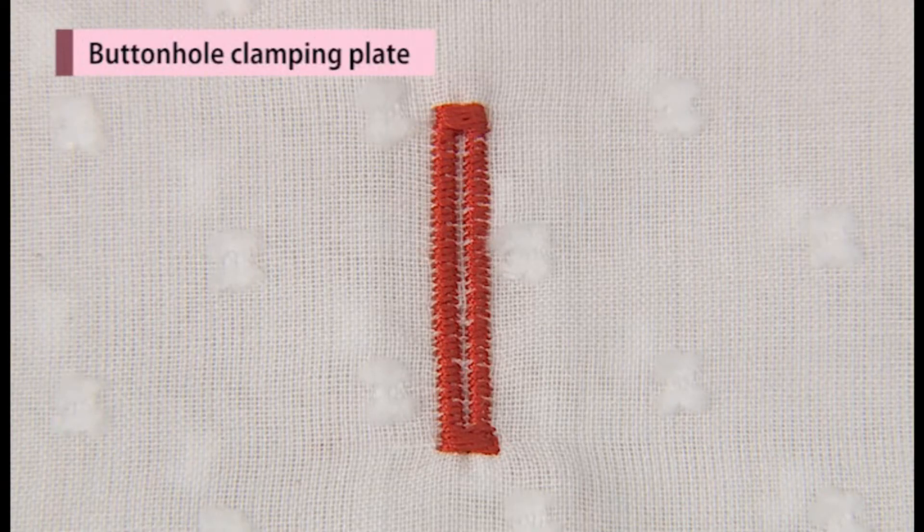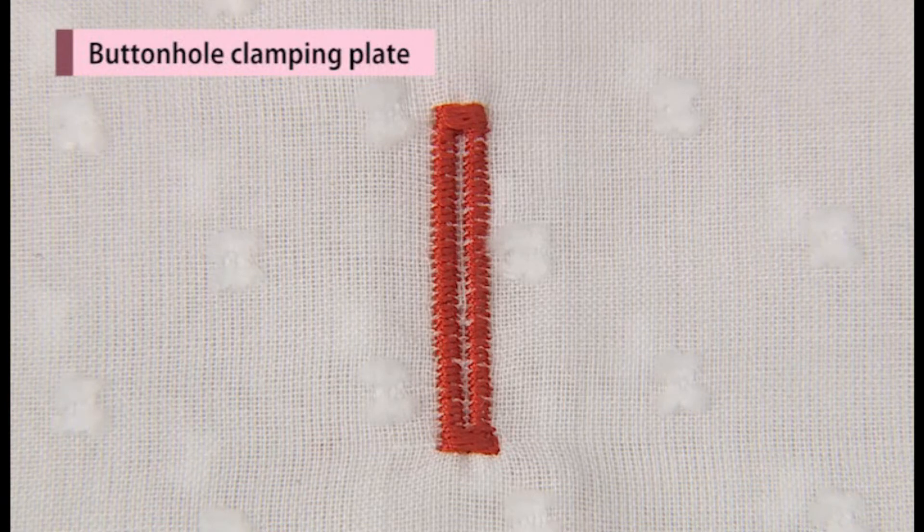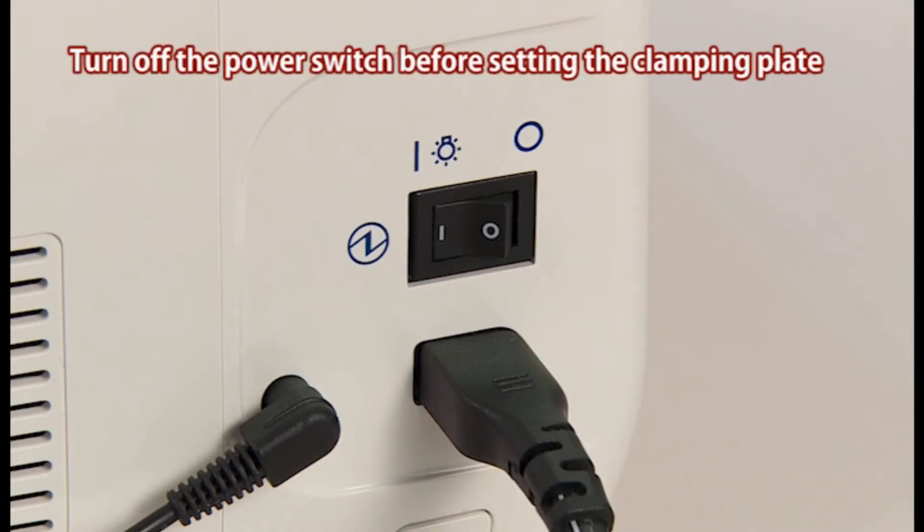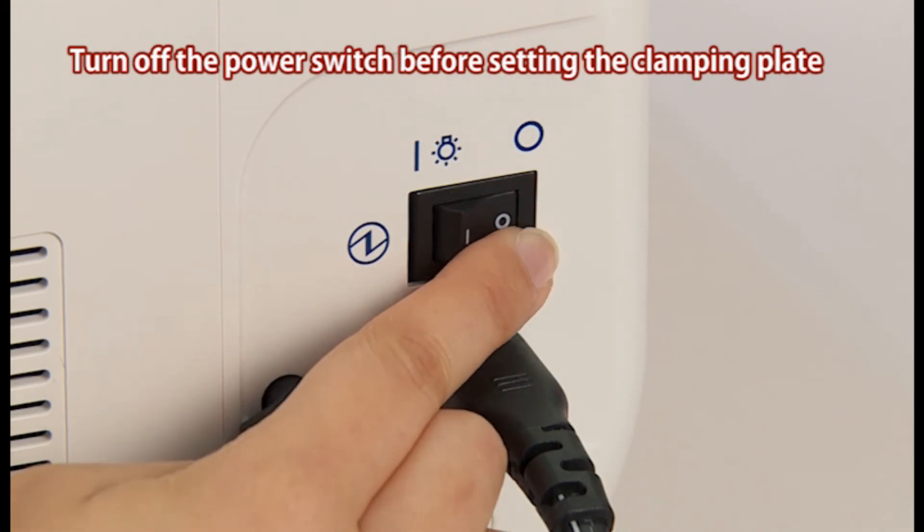It will be easier to sew buttonholes on thin fabrics and or near the overlapped sections if the clamping plate is used. Turn off the power when setting the clamping plate.